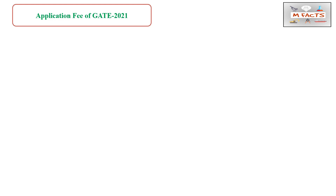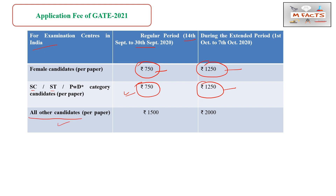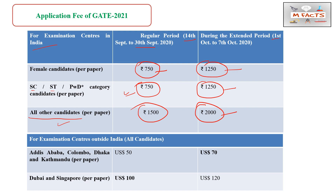Now let's talk about the application fee for GATE 2021 for exams held in India. Female candidates pay ₹750 in the regular period (14th–30th September) and ₹1250 in the extended period. SC/ST/PwD category candidates also pay ₹750 in the regular period and ₹1250 in the extended period. All other candidates (General/EWS) pay ₹1500 in the regular period and ₹2000 in the extended period (1st–17th October).